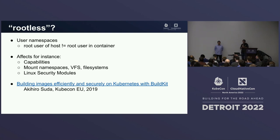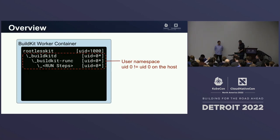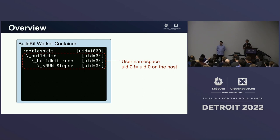If you're curious about how this works, there's a great presentation from Akihiro at KubeCon 2019 where he explained exactly how this works. To give a very quick overview: you have a buildkit worker, the PID 1 is running as UID 1000, an unprivileged user — exactly what we want. Everything else is running in a user namespace. The UID is zero, but it's not really zero — it's zero inside this namespace but not root on the host.